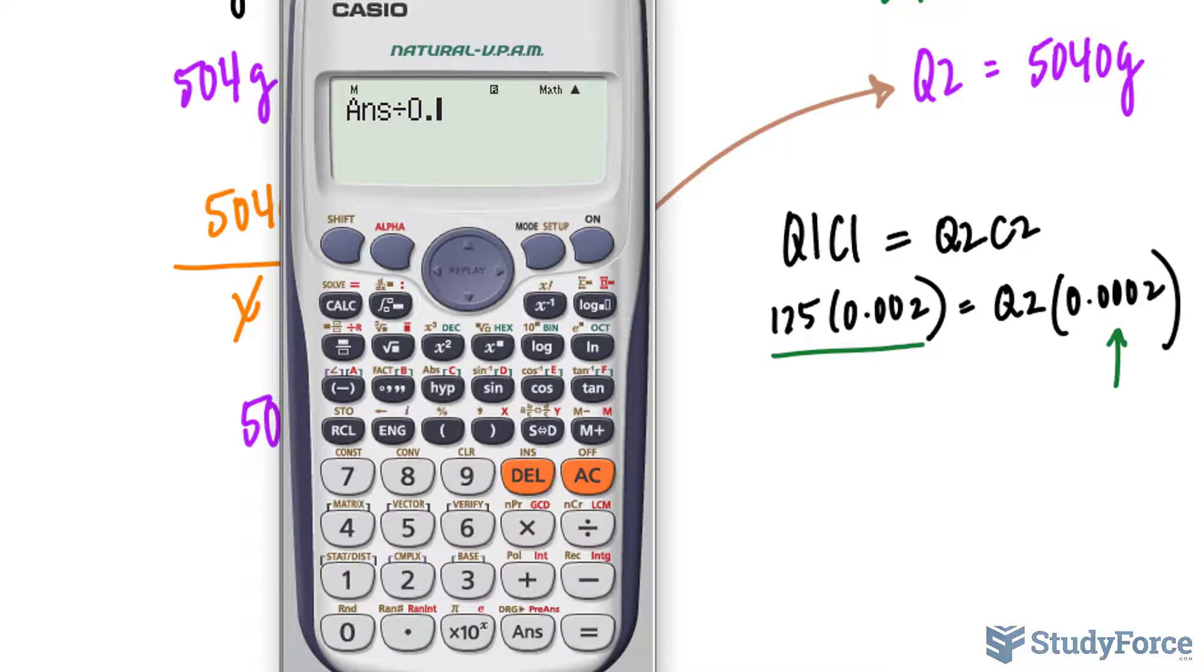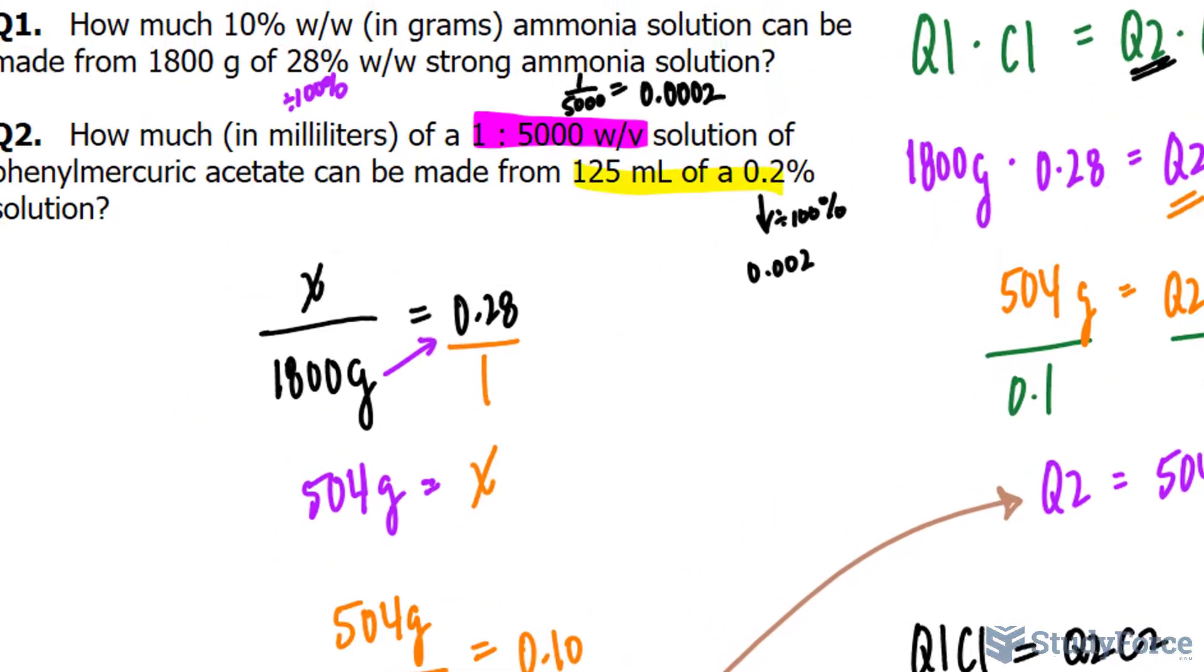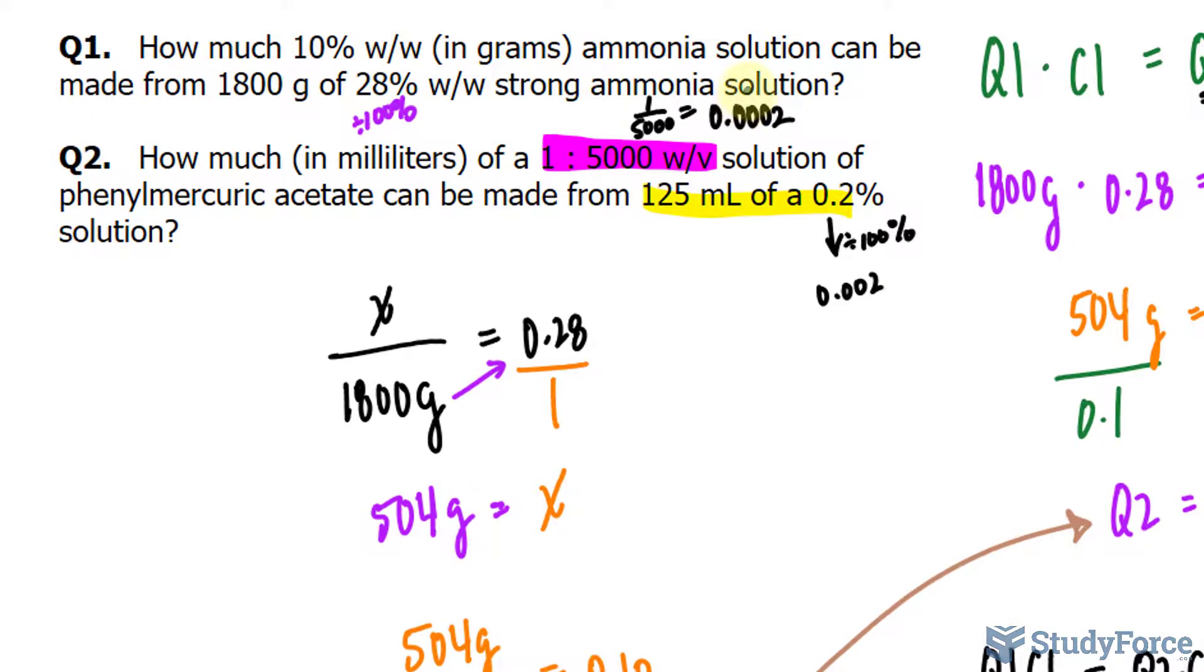Divide that by 0.0002. And that gives us a quantity of 1,250 milliliters. And that's the amount that we need to get a percentage or a strength that's 1 in 5,000.